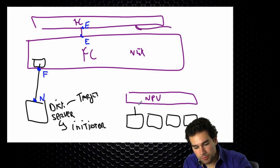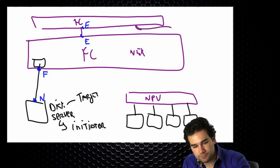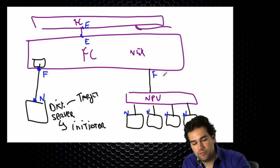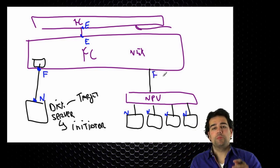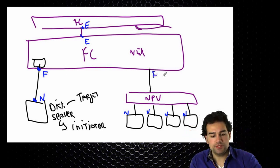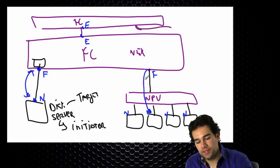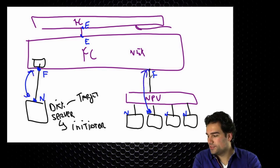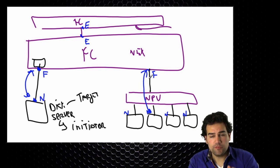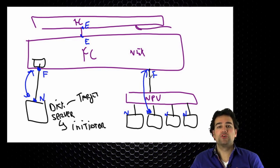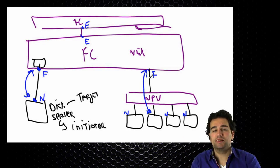I have a couple of nodes here — a couple of initiators. These are, again, my node ports. What I do is I virtualize all those node ports behind a single F port. So from a fiber channel switch standpoint, nothing changes — this is still F port to N port communication. It's just going through another device, but it's the same thing. Multiple N ports are virtualized behind that single F port.